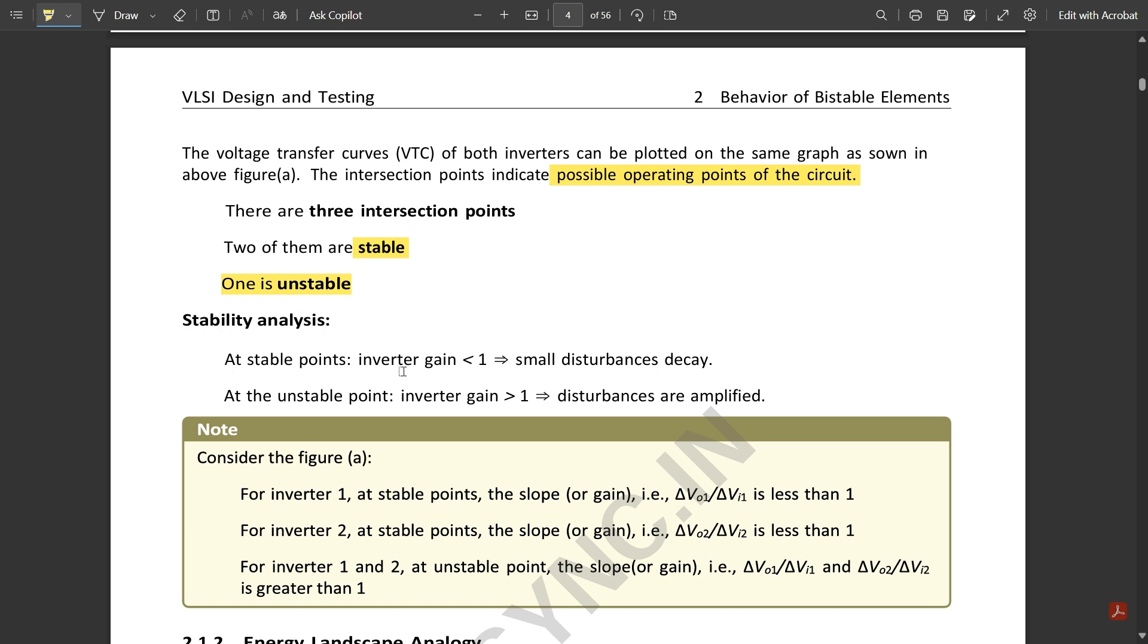Stability analysis: at stable points, inverter gain is less than 1, so small disturbances decay. At the unstable point, inverter gain is greater than 1, so disturbances are amplified.